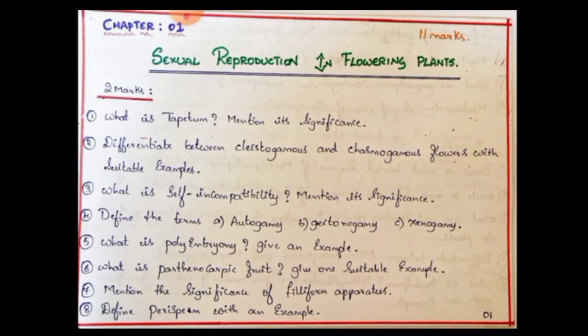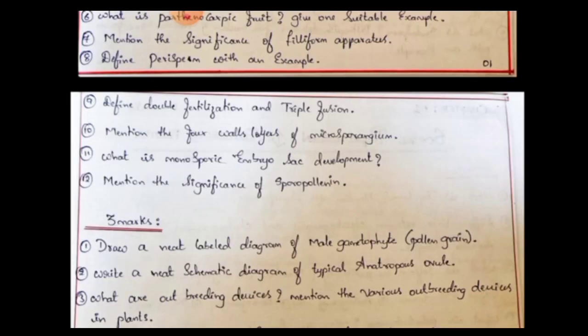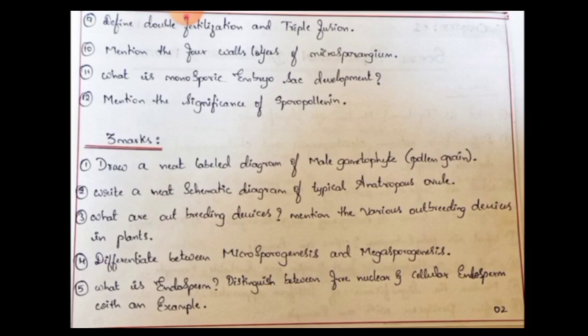Next: Mention the significance of filiform apparatus. Embryo sac development, or the embryo sac diagram — you can describe the finger-like projections of the filiform apparatus and its main function. Define perisperm with an example — perisperm needs one suitable example. Then define double fertilization and triple fusion.